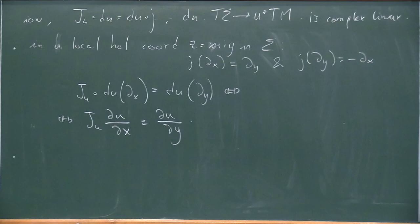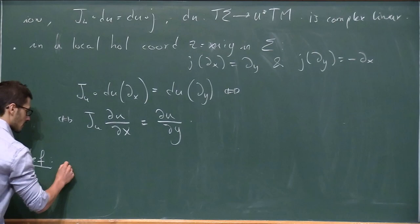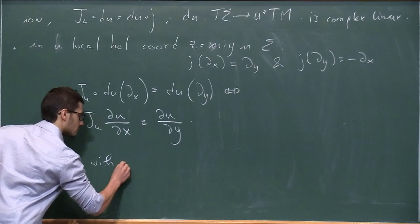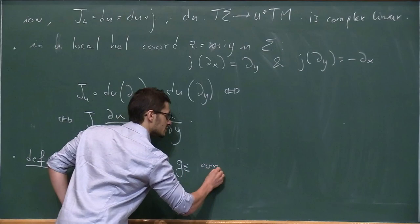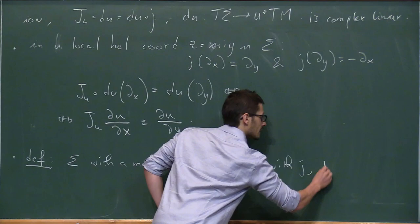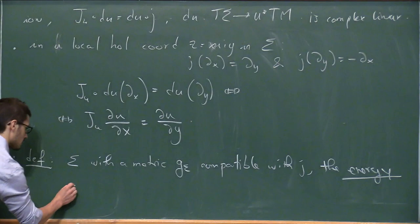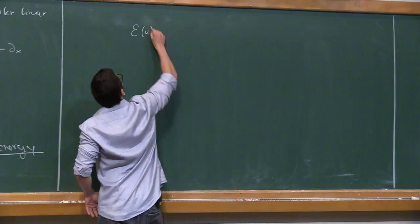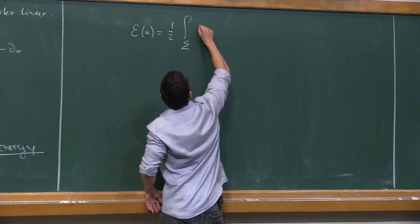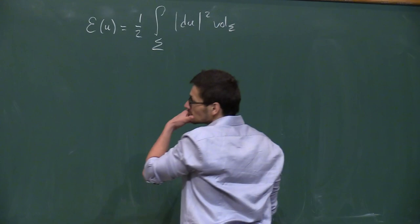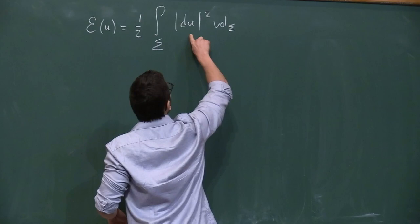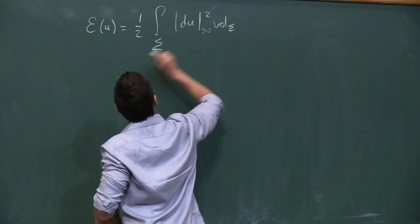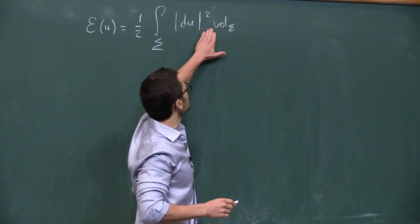Next I'm going to define a quantity associated with a map. I'm going to equip sigma with a metric g_sigma compatible with j. Then the energy of a map — not necessarily holomorphic — from sigma to M is the Dirichlet energy: the integral of the norm of du squared times the volume form on sigma. You need g_sigma to define the volume form, and both g_sigma and g to compute the metric. But I'm not going to keep track of that explicitly.